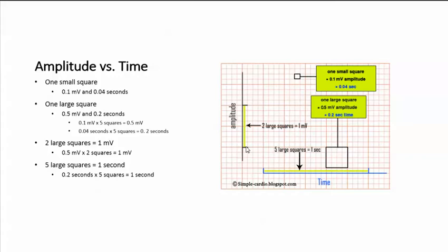Two large squares equals 1 millivolt. We get that by multiplying 0.5 millivolts times 2 squares. That's 1 millivolt.